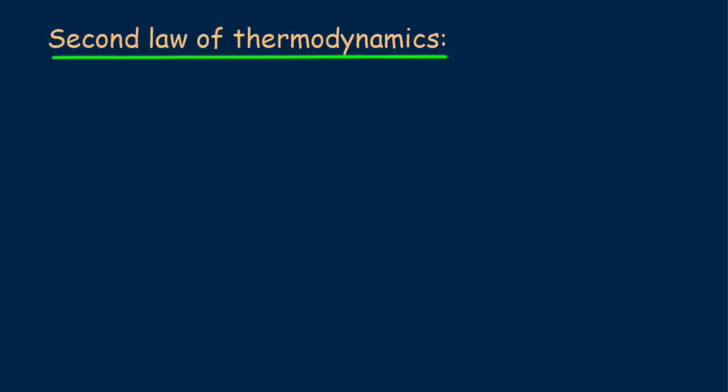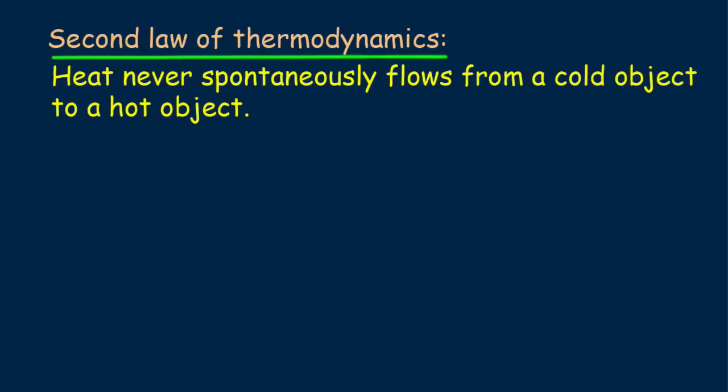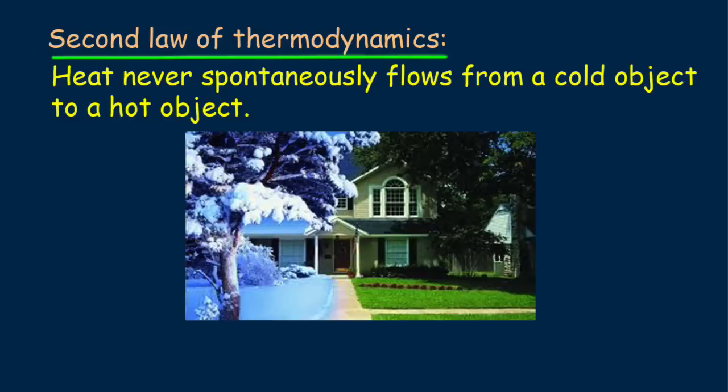The second law of thermodynamics restates what we've learned about the direction of heat flow. Heat never spontaneously flows from a cold object to a hot object. In winter, heat flows from the inside, a warm, heated home, to the cold air outside. In summer, heat flows from the hot air outside into the cooler interior. The direction of spontaneous heat flow is from hot to cold.